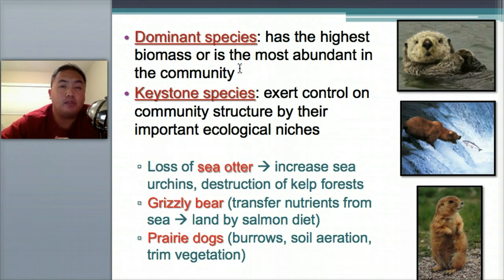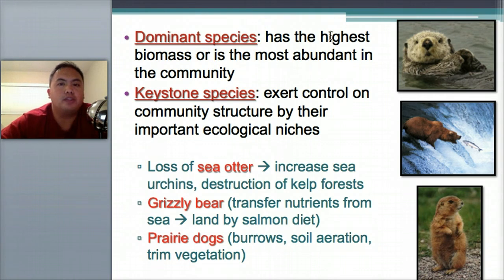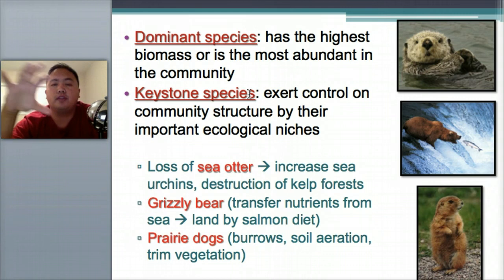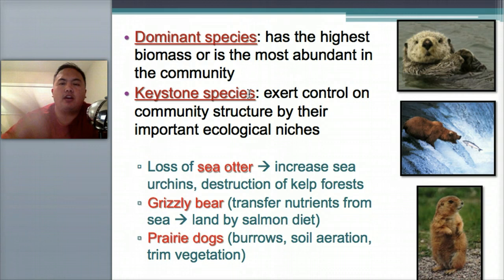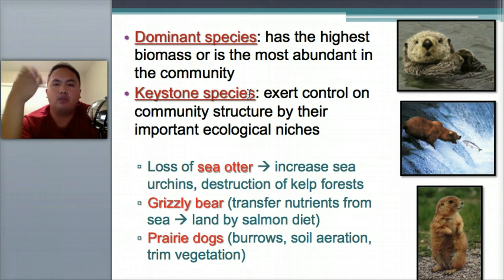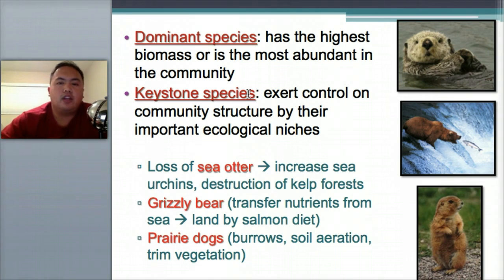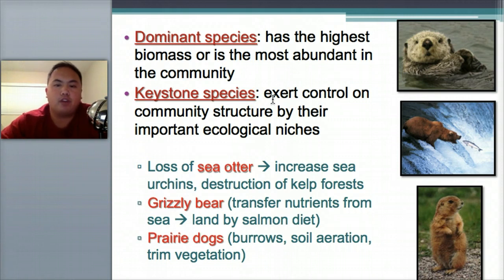There are different types of species — key words you should know. A dominant species has the highest biomass or is the most abundant. A keystone species — think of a medieval arch where the center stone holds everything together. If that keystone is removed, the arch falls apart. Keystone species are species that if removed or died off, the rest of the food chain falls apart.